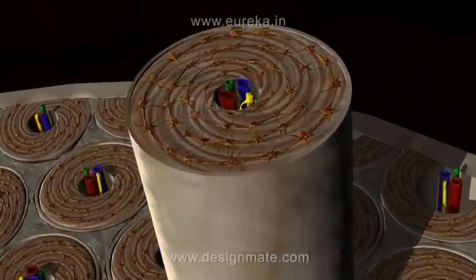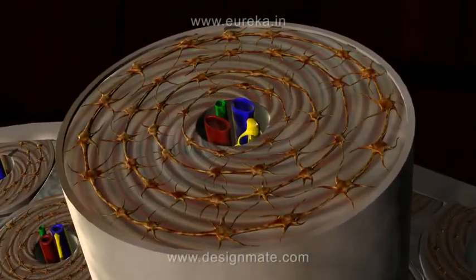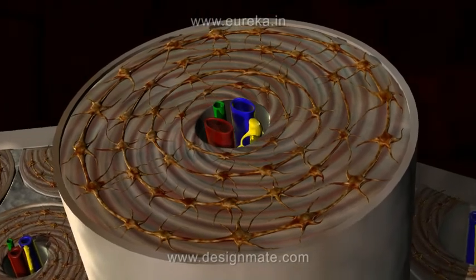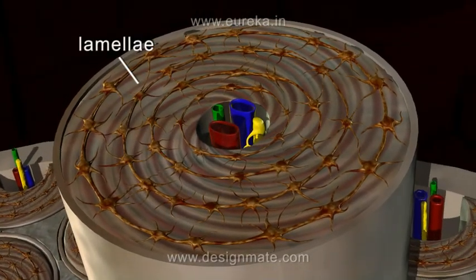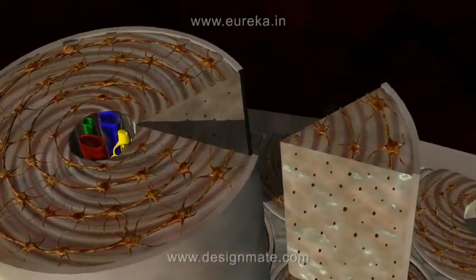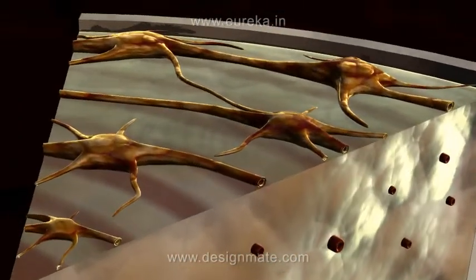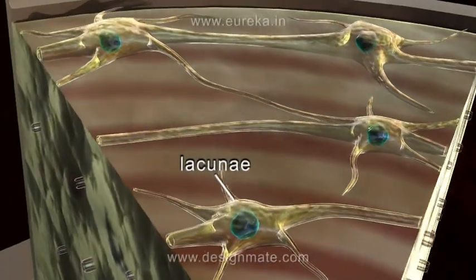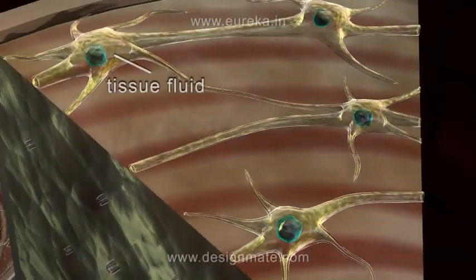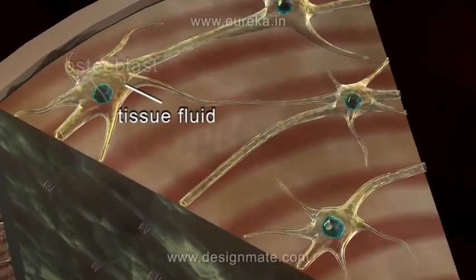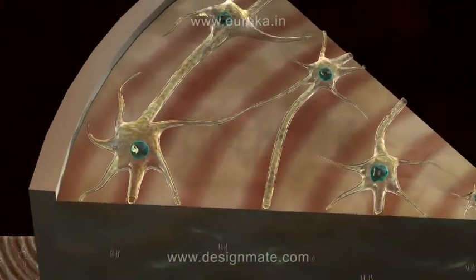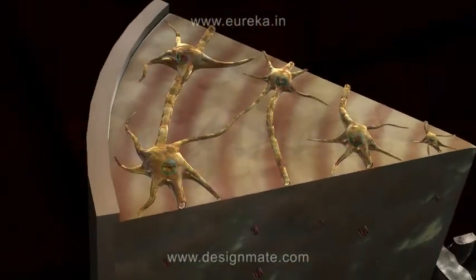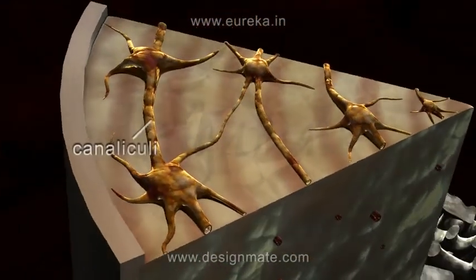Each Haversian system consists of several concentric layers of plates of bones known as lamellae. In between the lamellae, we observe flat irregular spaces known as lacunae. Tissue fluid is present in them along with osteoblasts. Lacunae are connected to each other by fine channels called the canaliculi.